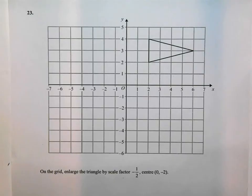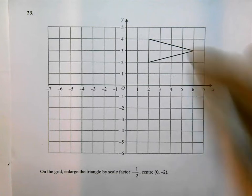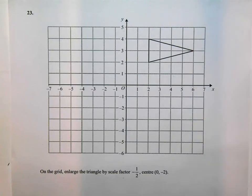This is question number 23 on the November 2013 higher non-calculator paper. You've got a grid here and there's a triangle on the grid. The question says on the grid enlarge the triangle by a scale factor of minus a half, center 0 minus 2.